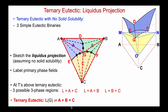At the ternary eutectic, where the liquid reaches G, I'd use this construct — shown in hatched red lines — joining the three solid phases. I'd place the eutectic liquid composition G in the middle and connect it to each of the solids using these three hatched lines. Overall, this represents a four-phase equilibrium: liquid at G in equilibrium with A plus B plus C.